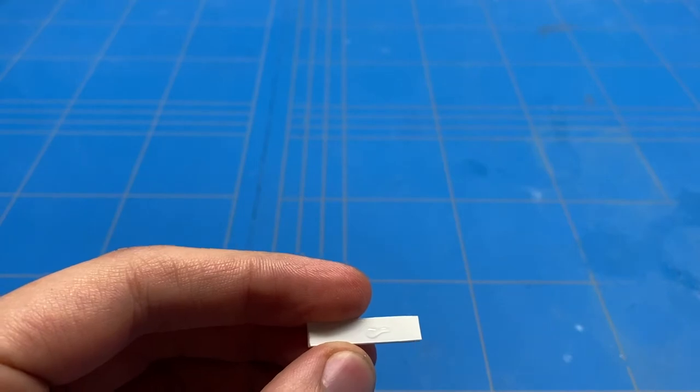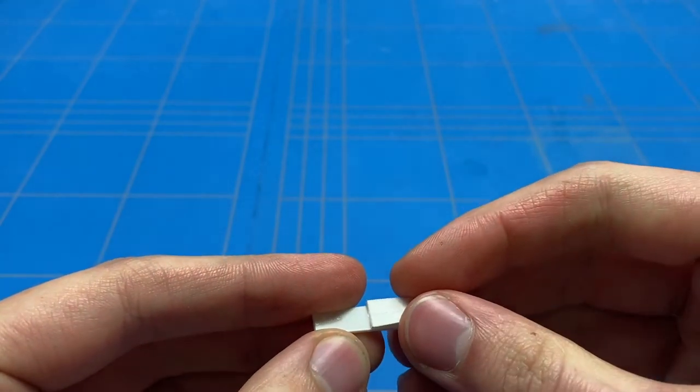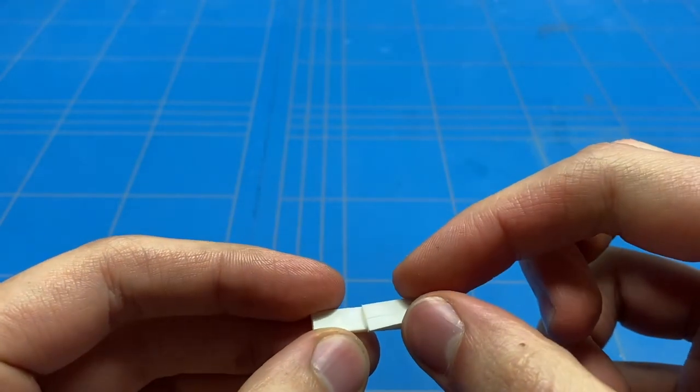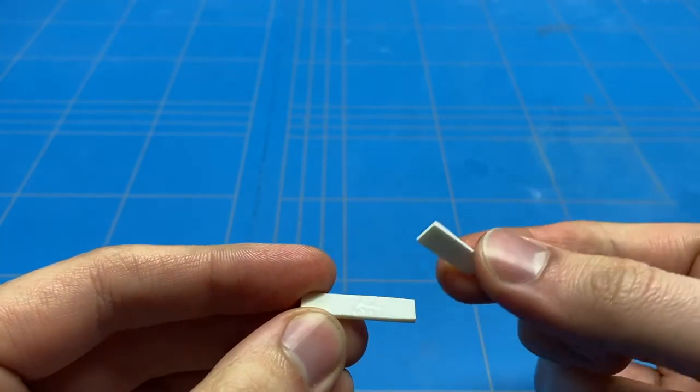So you apply some of the glue, of course, and take out the second part and want to glue it together. Now in this case, it's still moving around a bit and can still be removed.